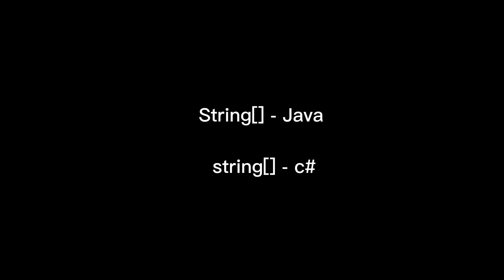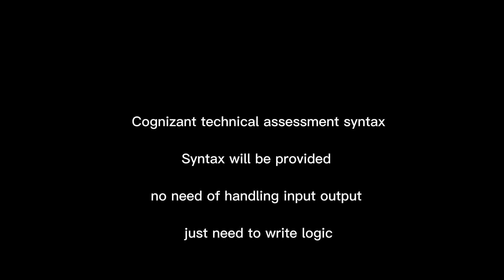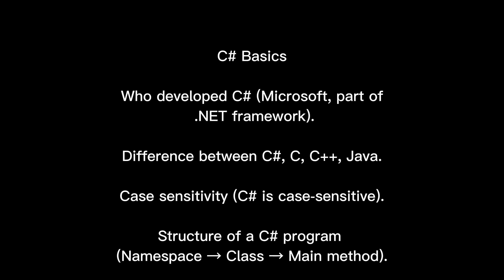A common mistake students make: in Java the main method uses capital 'String', but in C# you use lowercase 'string'. In the Cognizant technical assessment, they provide the main method and function — you just need to write the internal logic. Also note that C# data types include 'decimal' and 'bool' instead of Java's 'double' and 'boolean' — you must use 'bool', not 'boolean'.